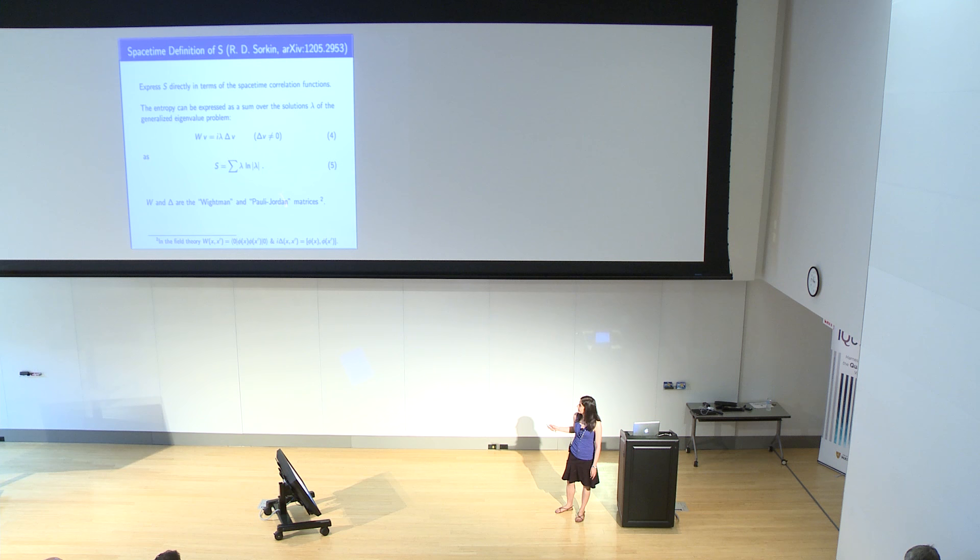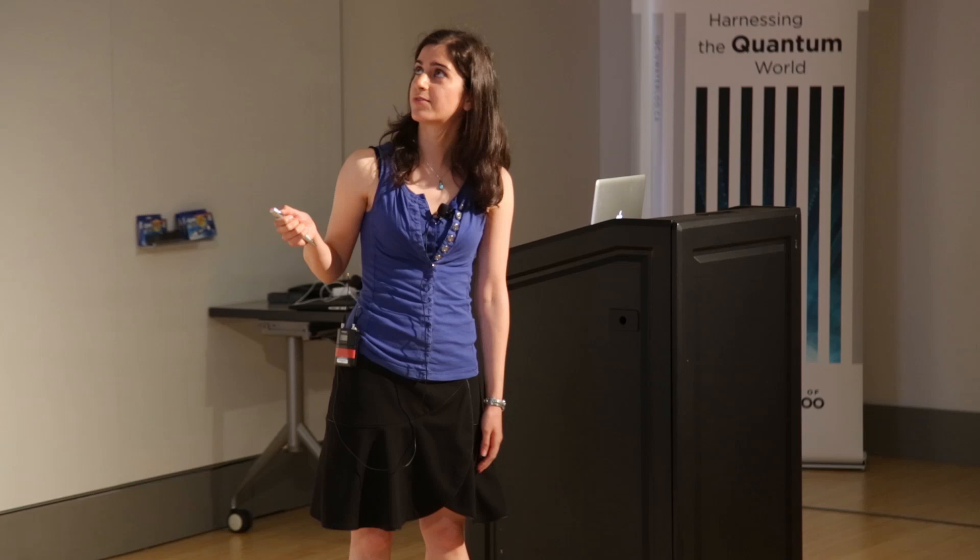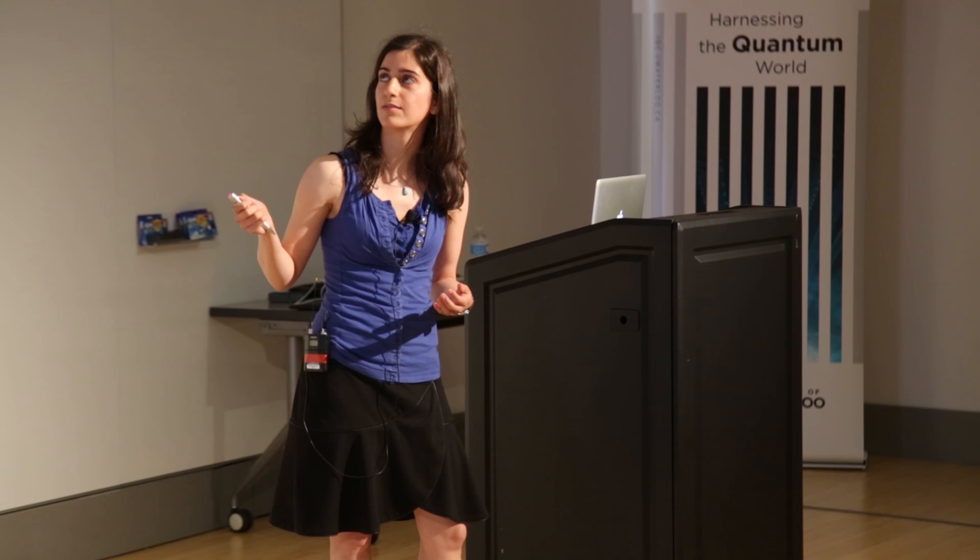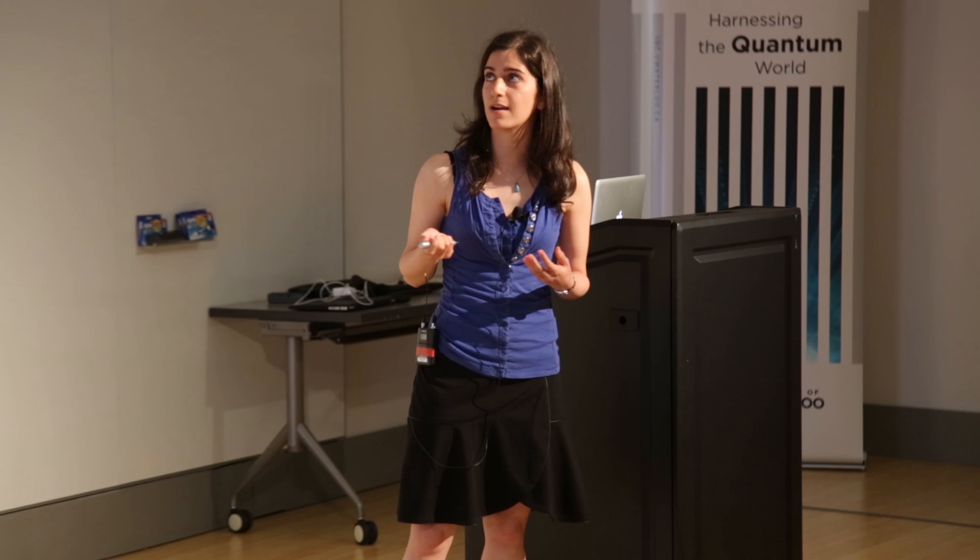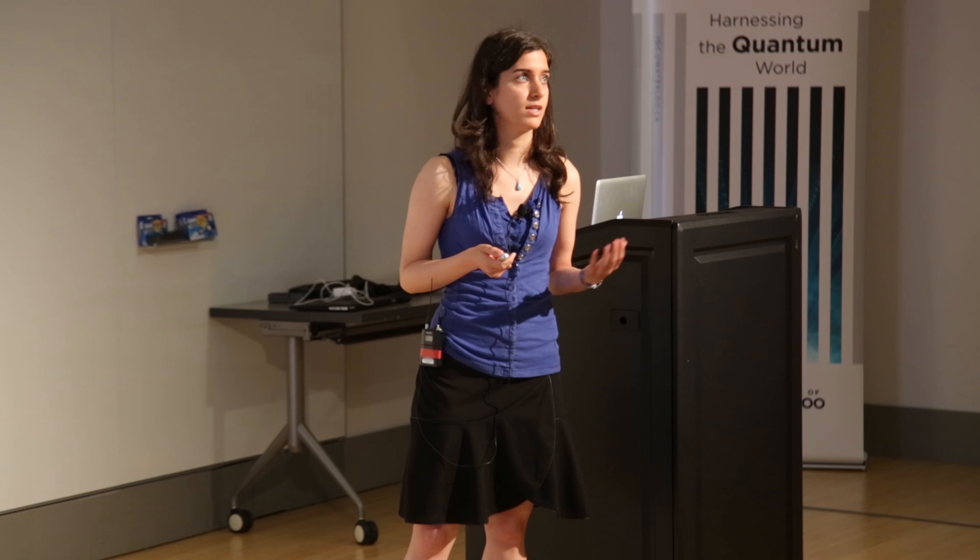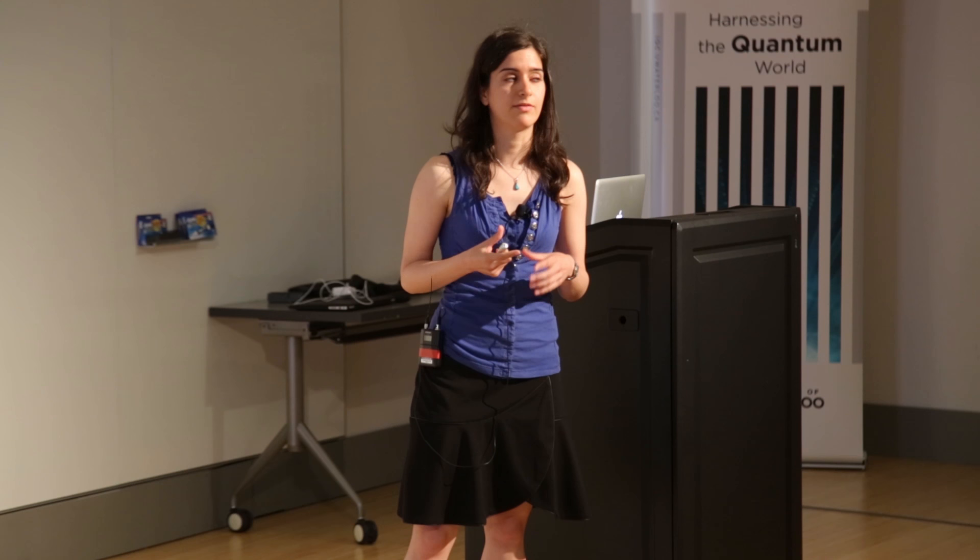W is the Wightman function, so it's just the two-point function of the field, and delta is the Pauli-Jordan function, which is the commutator of the field. Once we have these, the entropy is defined as this sum over the eigenvalues lambda to this generalized eigenvalue problem involving W and delta, and it's important that we not include functions in the kernel of delta. If W and delta are restricted to a sub-region within a larger spacetime, the entropy that you would get out of this formula would be an entanglement entropy. Furthermore, we can compare the results that we get with this definition to those with the other definition if the regions of spacetime which we're considering are the domains of dependence of the hypersurfaces in the other definition.